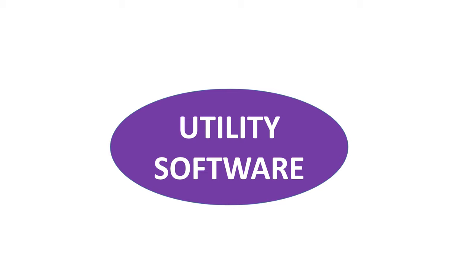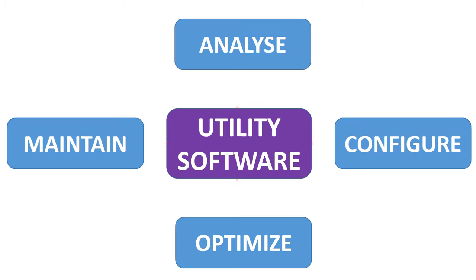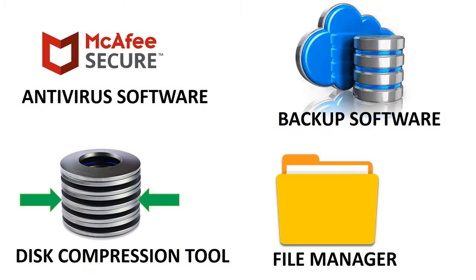Utility software is software used to analyze, configure, optimize, and maintain the computer. Examples of utility software are antivirus software, backup software, disk compression tools, and file manager.